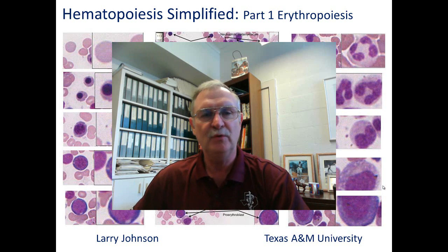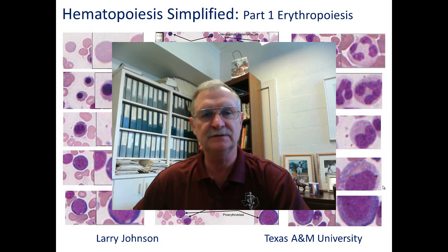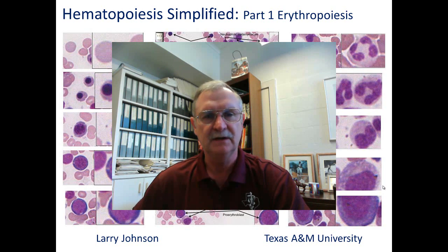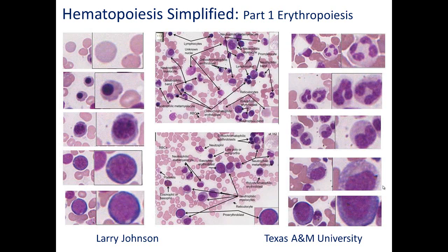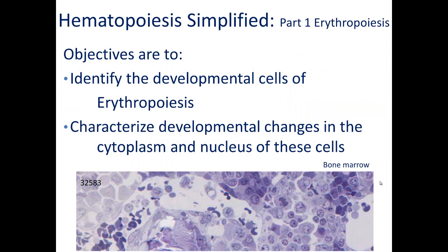Today we want to talk about hematopoiesis simplified. We want to start with the most advanced cell type that appears in blood and then step back step by step to the most immature form seen in the bone marrow. There will be two parts: part one covers red blood cell production, part two covers neutrophil production.